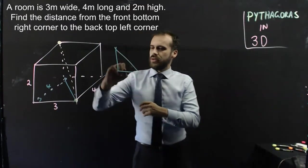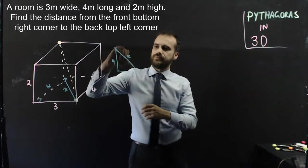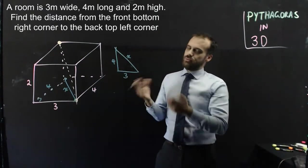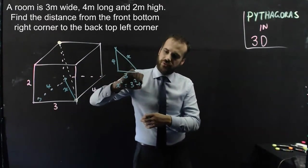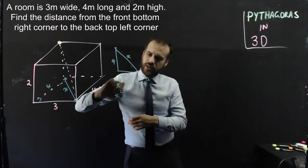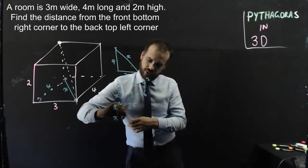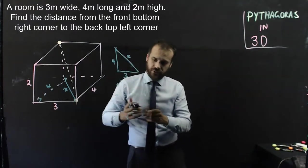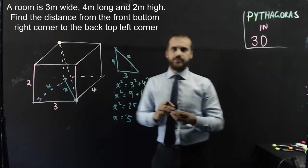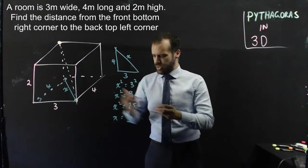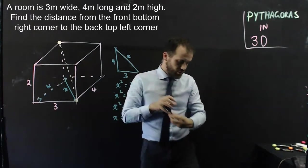What we have is a 3 by 4 by something triangle between those points. Drawing it in 2D: three by four by x. Using Pythagoras: x² = 3² + 4², so x² = 9 + 16, x² = 25, and x = √25 = 5.